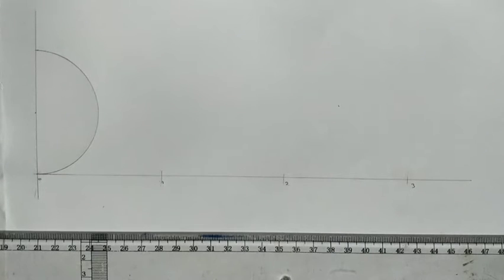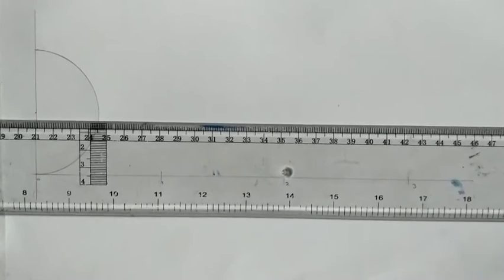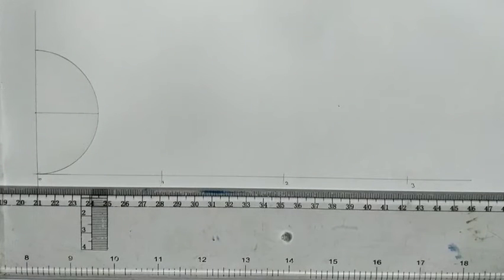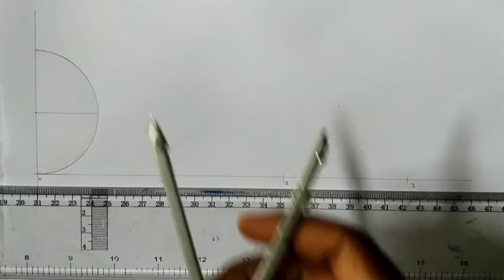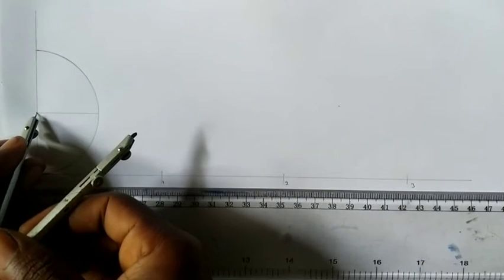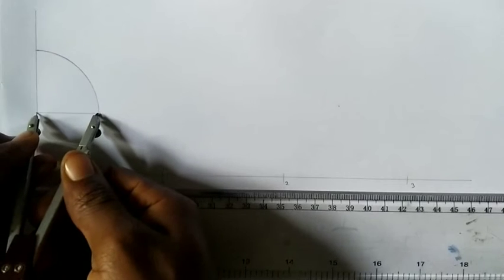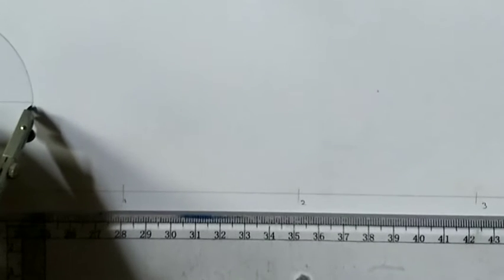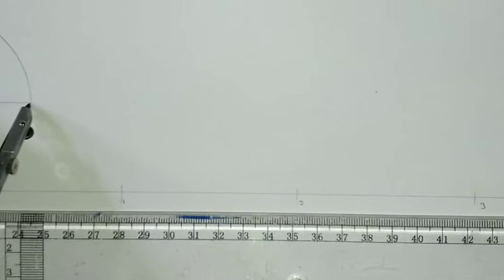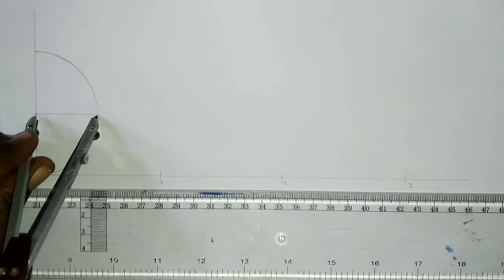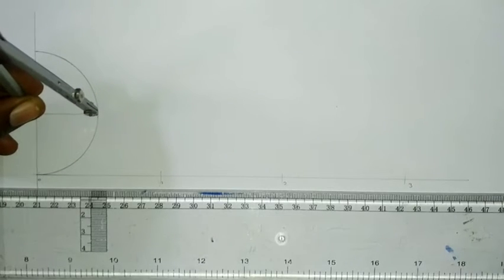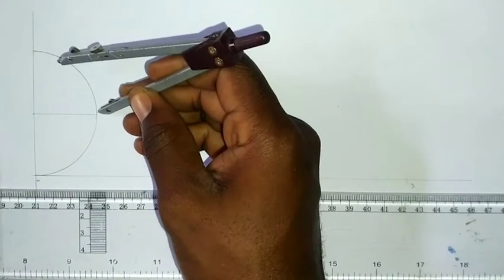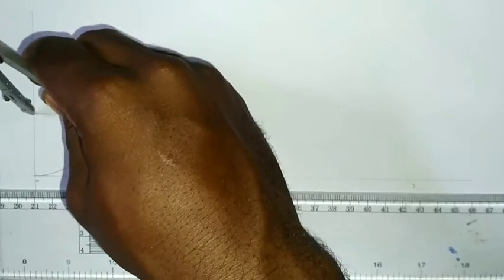Now what you do, you are going to draw your line from this center here to touch the circle. You use your compass and place it at this end here. Can you see that? Let me show you very well. At this end here, and you draw the arc. You turn to the other side and draw this. It will cut here.